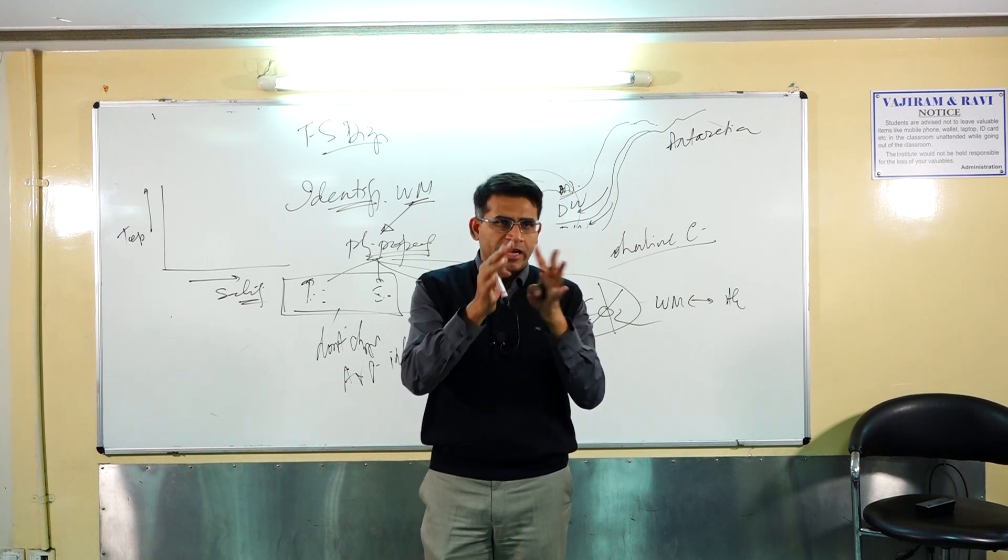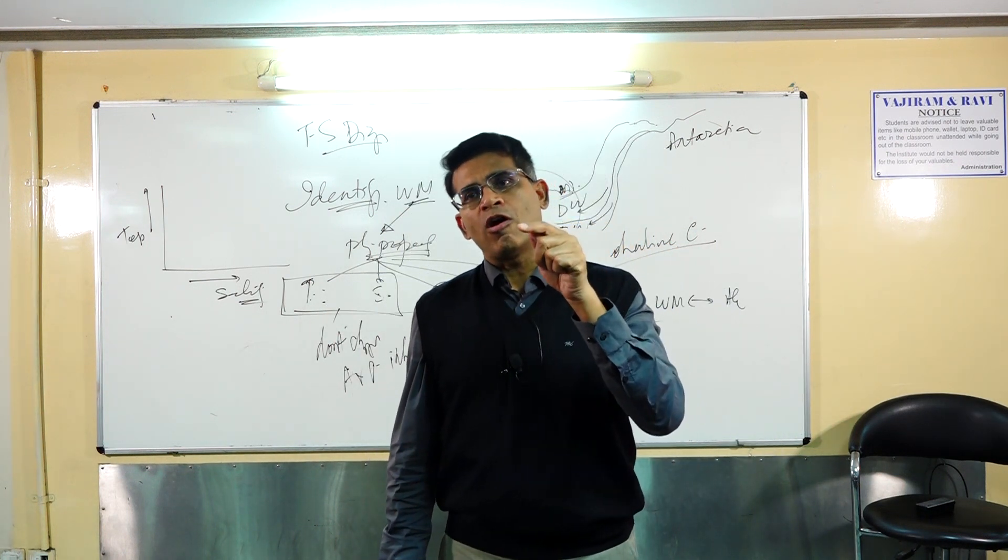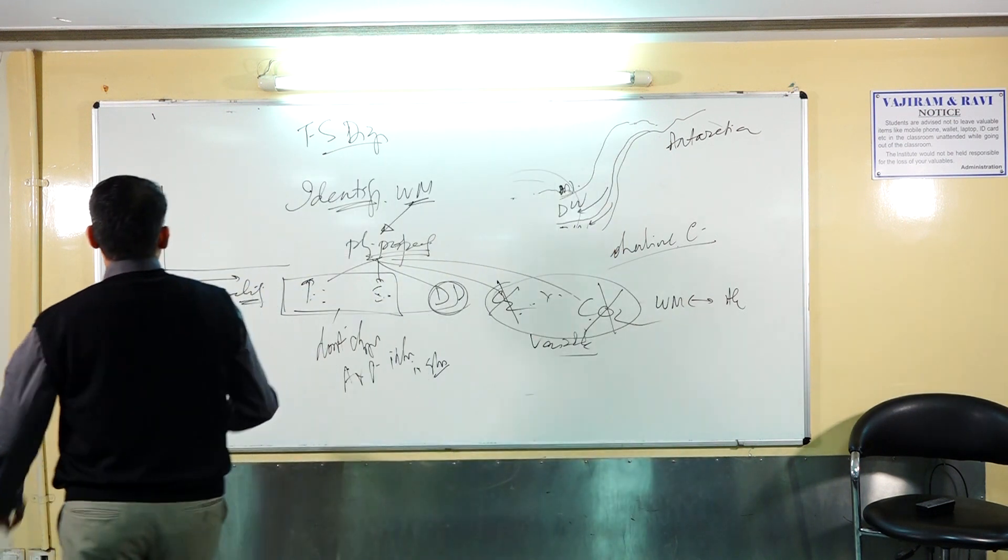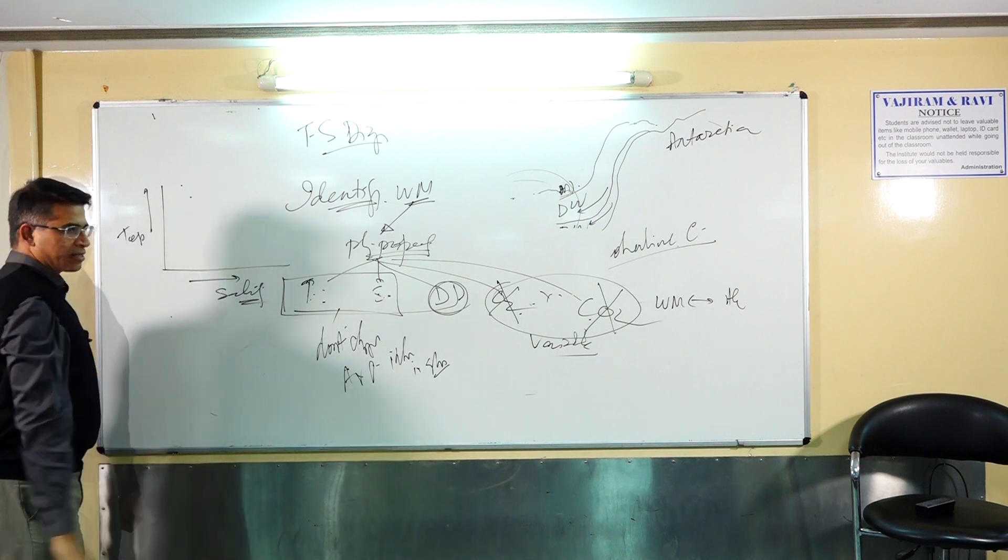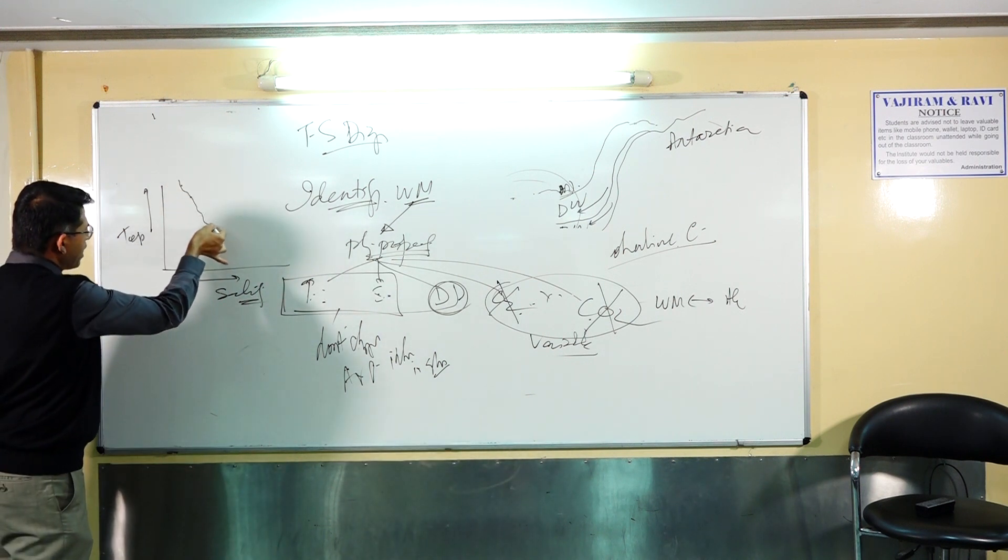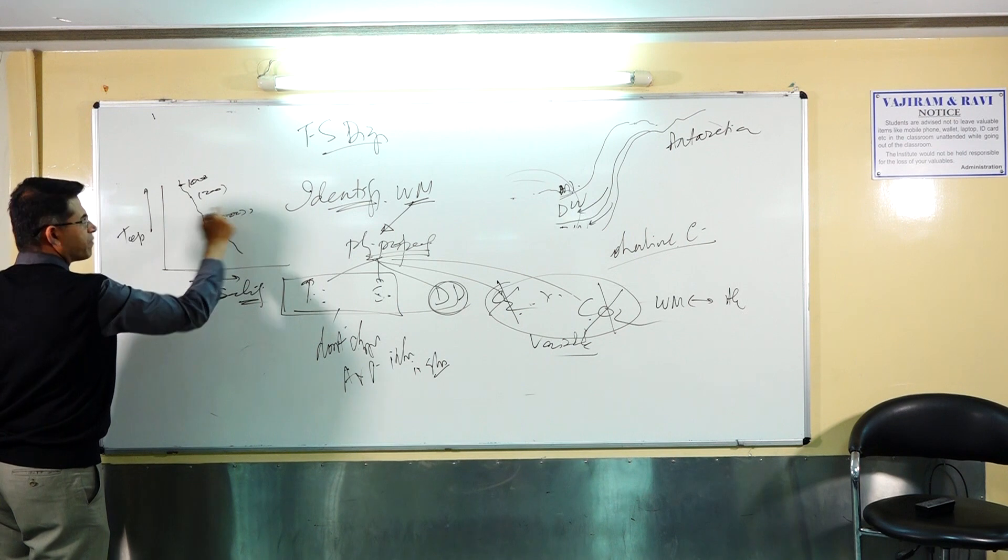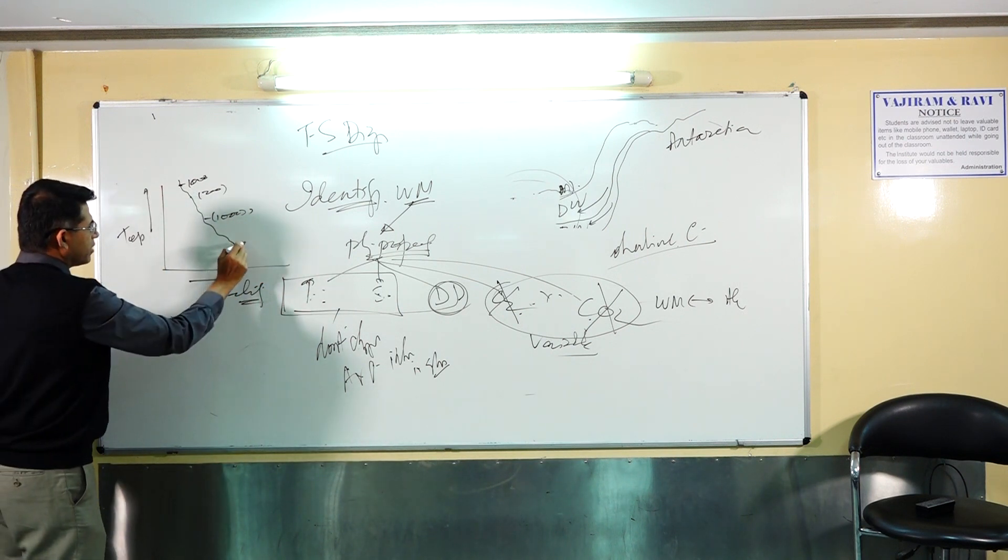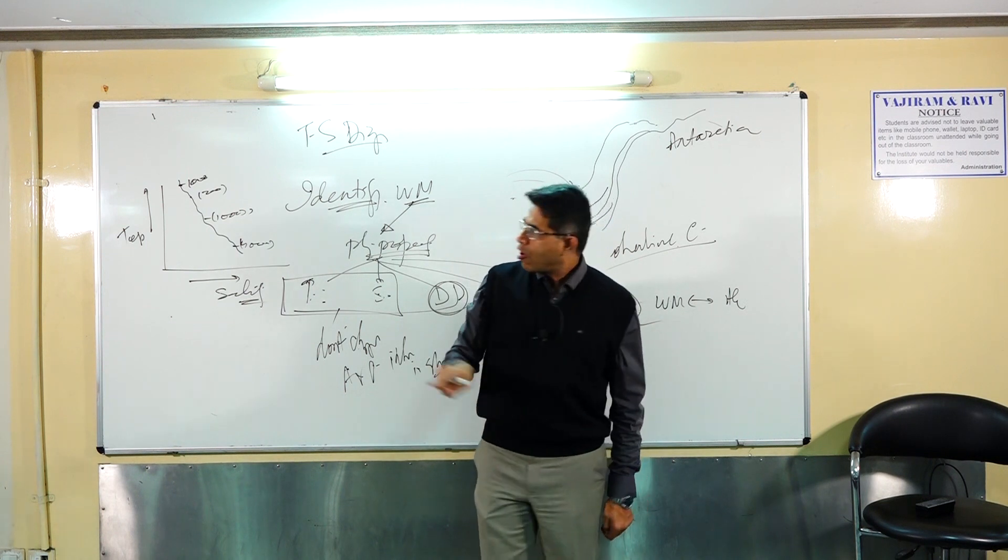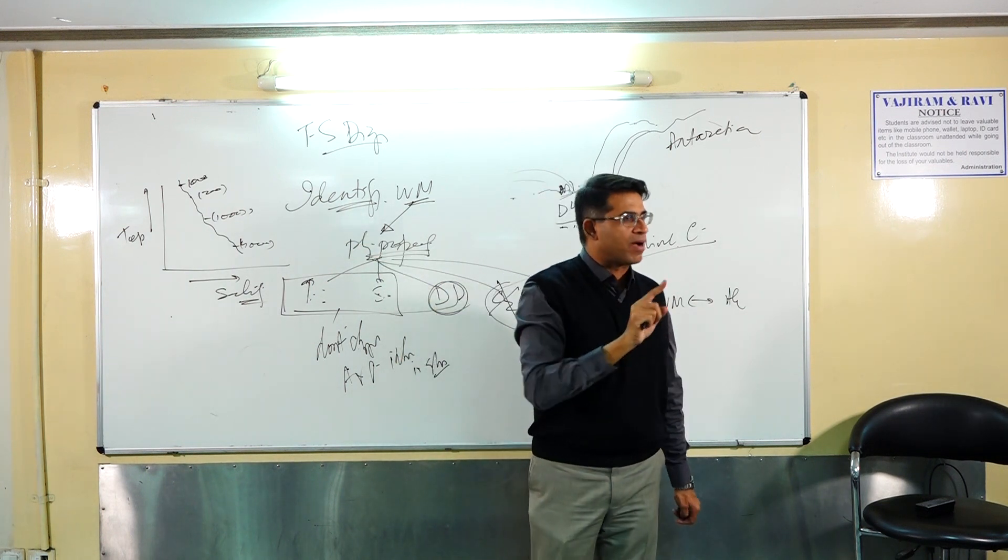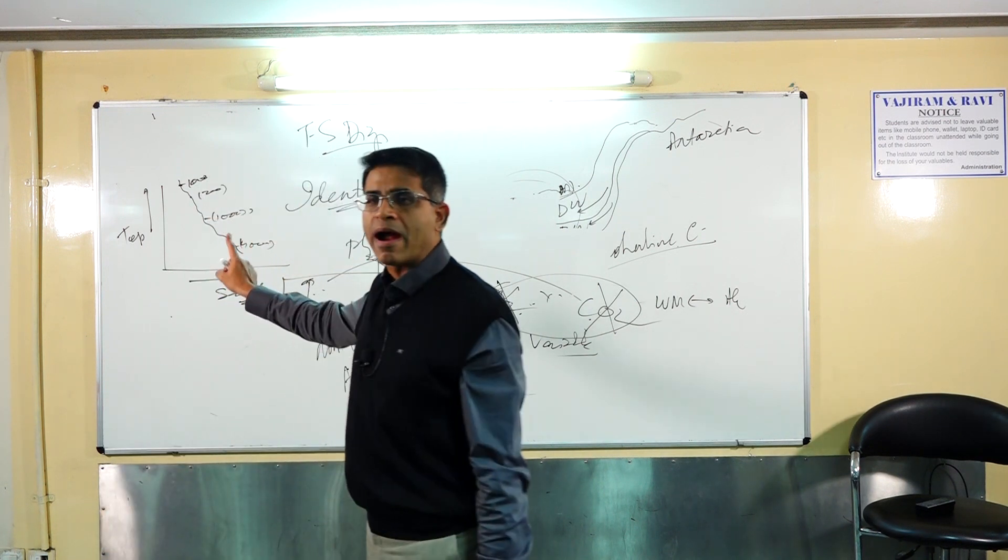There are two techniques how the T-S plotting is done. One is, you can plot on the basis of depth of the water. Temperature salinity for depth 100 meters, temperature salinity for the depth say 200 meters. So along this line, you have depth. 100 meters depth, 200 meters depth, 1000 meters depth. Temperature is falling, salinity is increasing. This is 4000 meters depth.